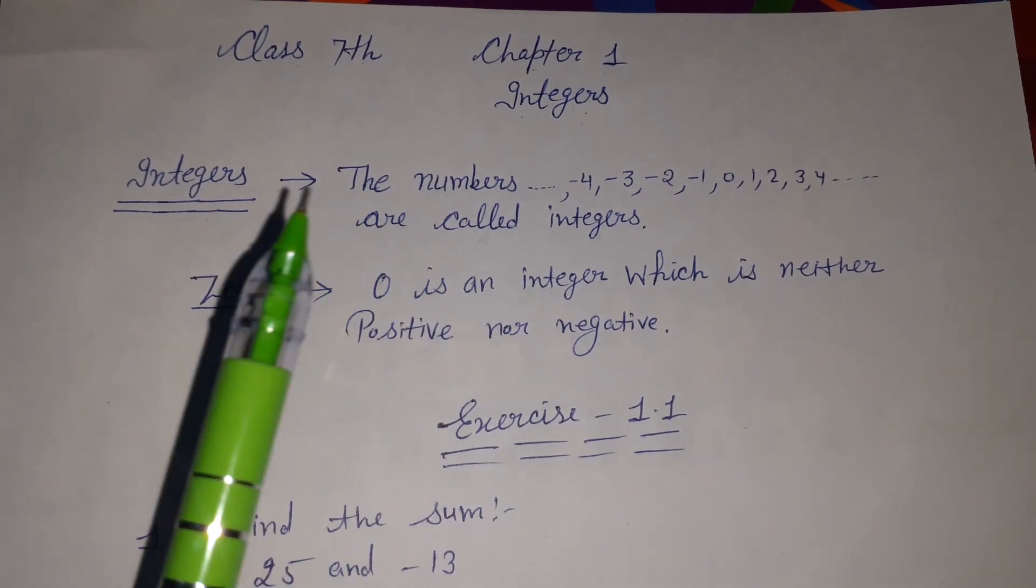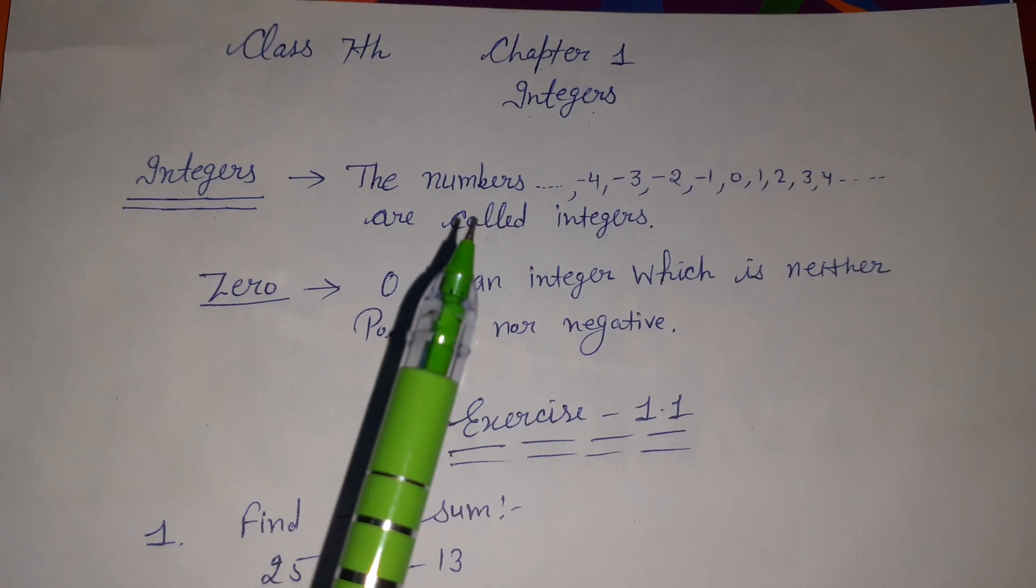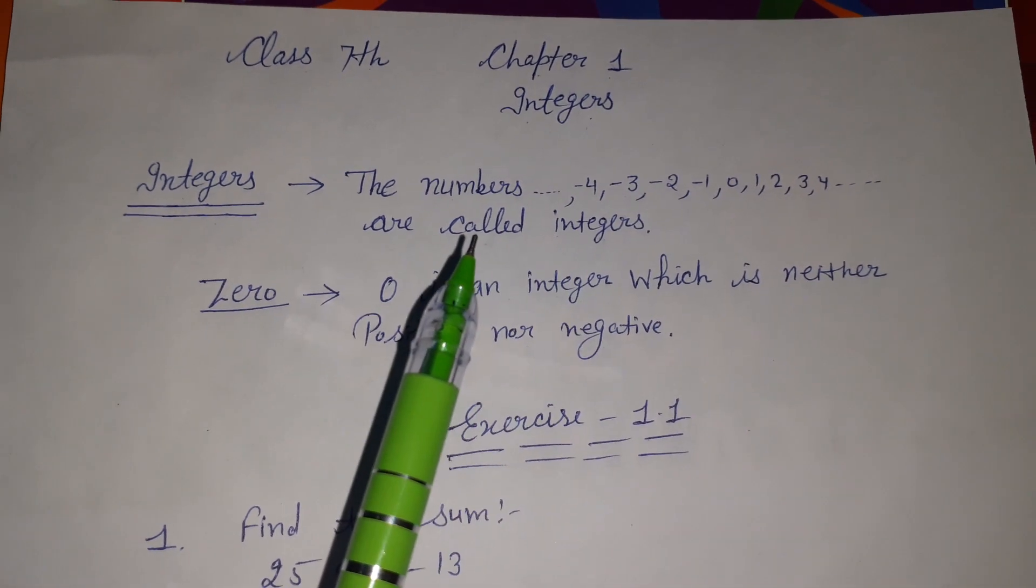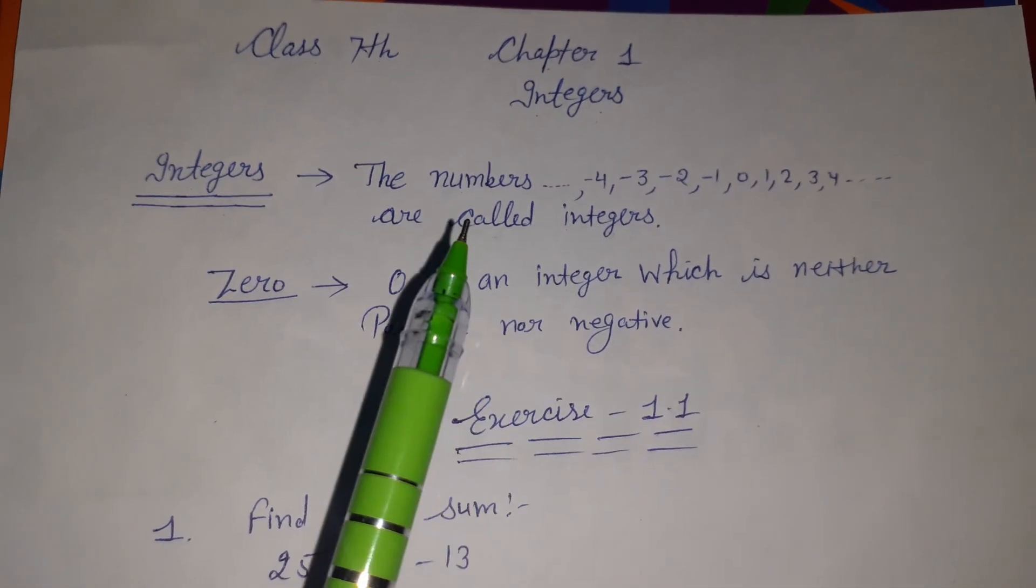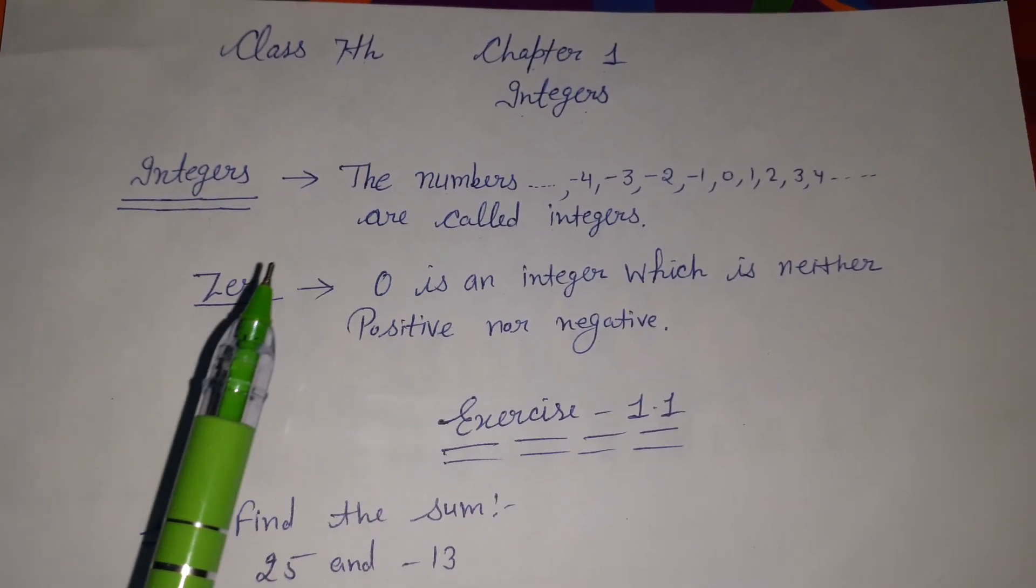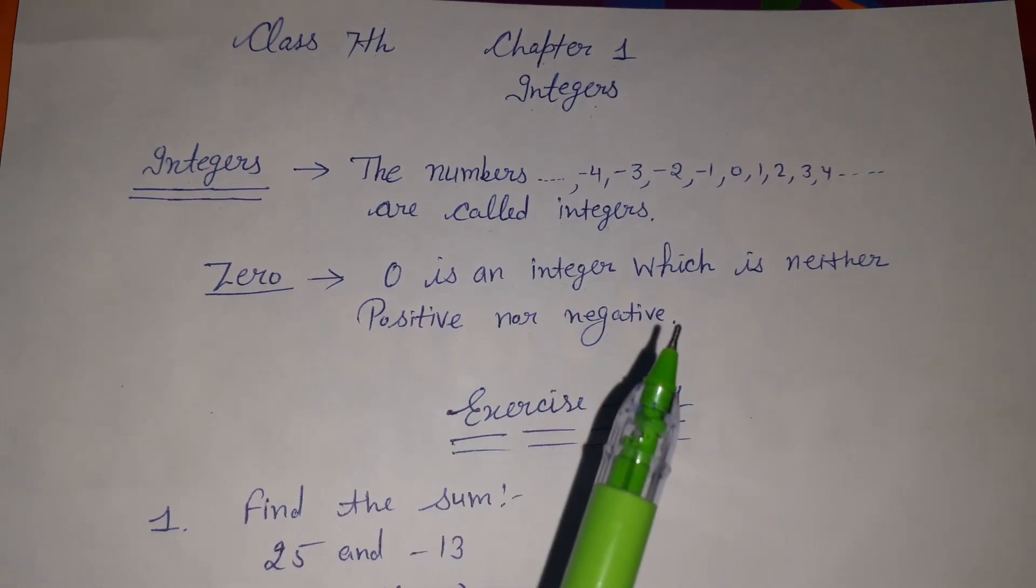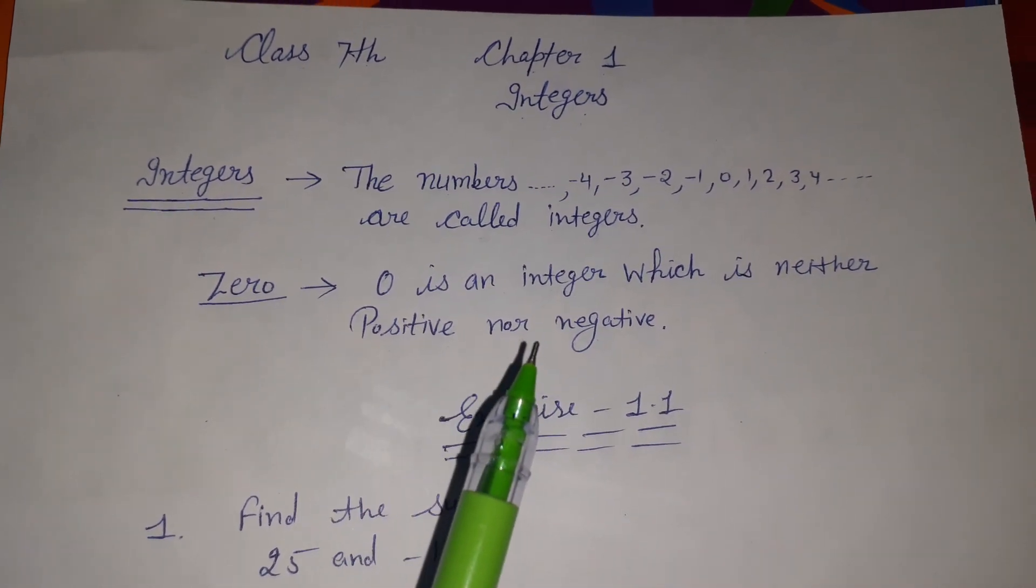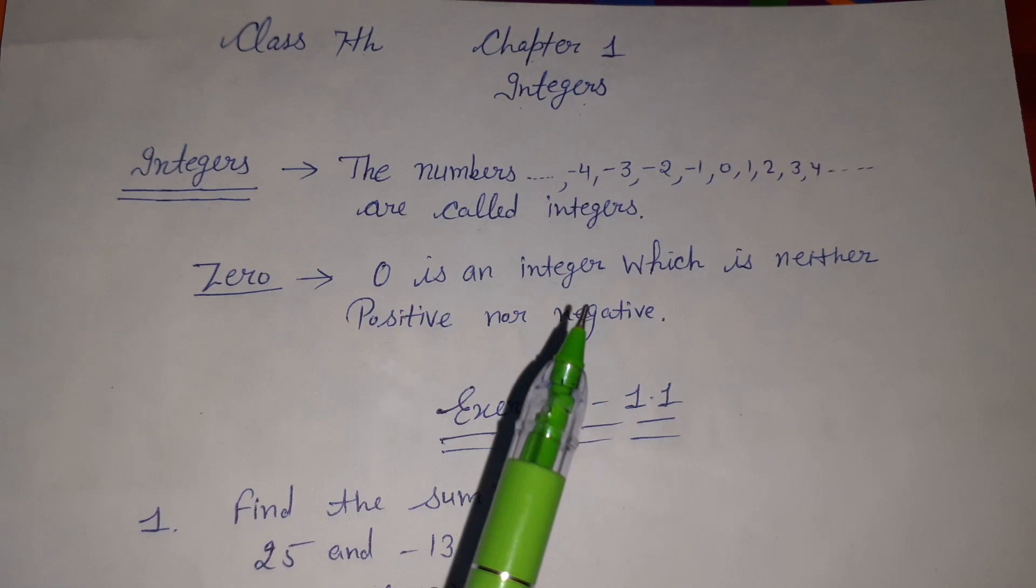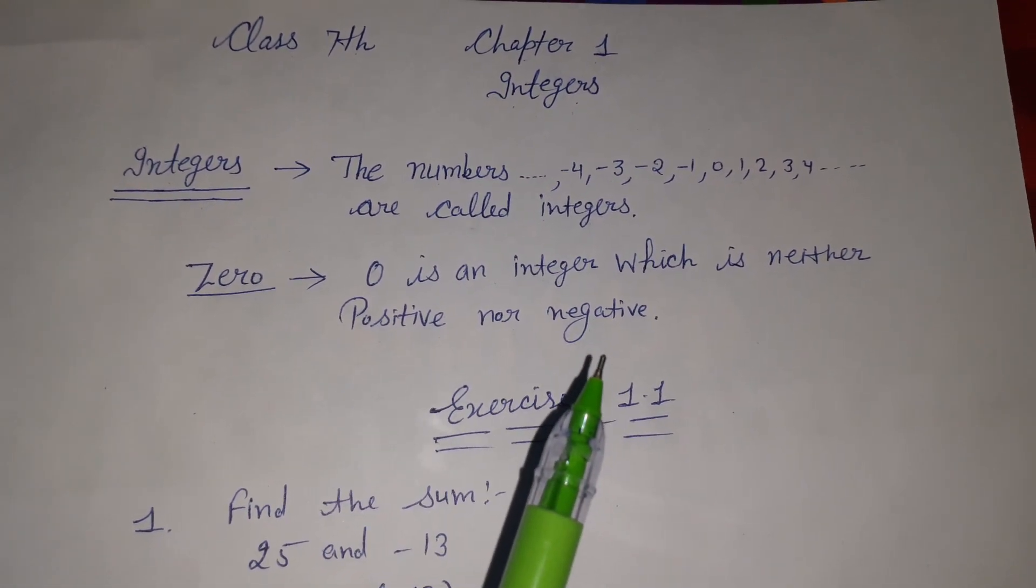Integers के अंदर negative and positive दोनों types के numbers आते हैं. All positive and negative numbers are called integers. Zero is an integer which is neither positive nor negative.